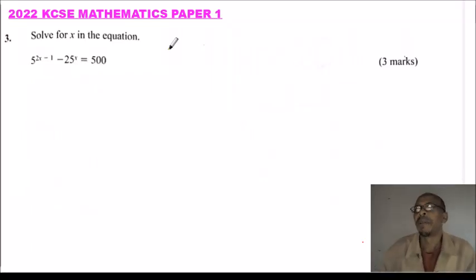This is question number 3, 2022 KCSE Mathematics Paper 1. We are told solve for x in the equation 5^(2x-1) - 25x = 500.